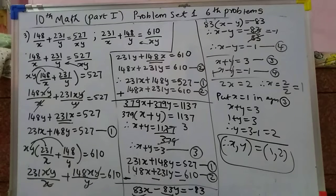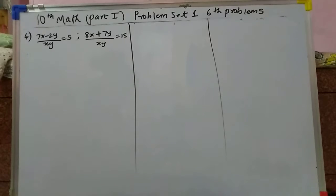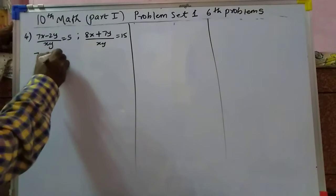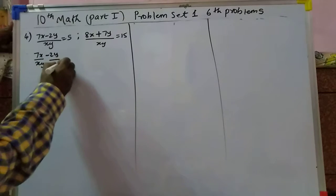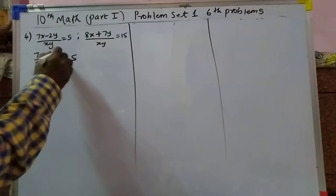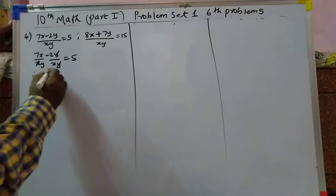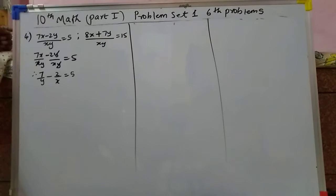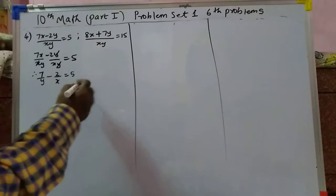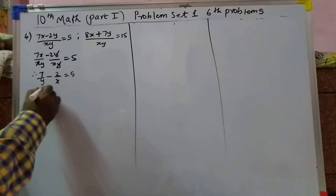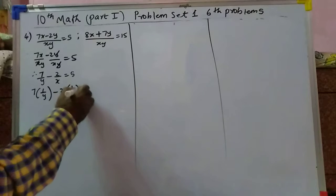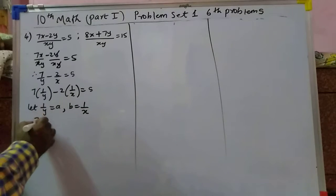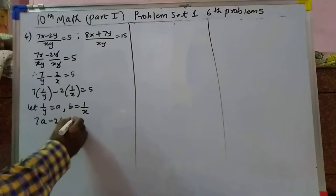Now moving to the fourth problem. We have x y terms. After cross-multiplying and cutting: 7 upon y minus 2 upon x equals 5. This can be written as 7 into 1 upon y minus 2 into 1 upon x equals 5. Let 1 by y equal to a and 1 by x equal to b. Substituting: 7a minus 2b equals 5, equation 1.